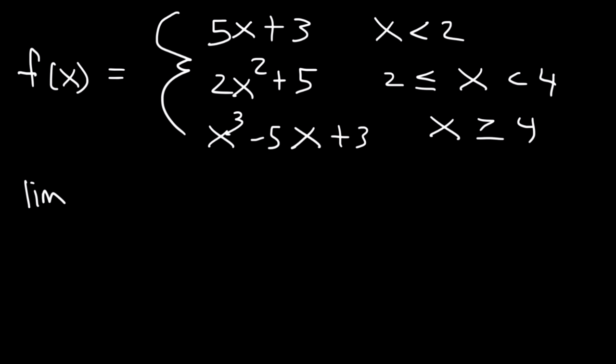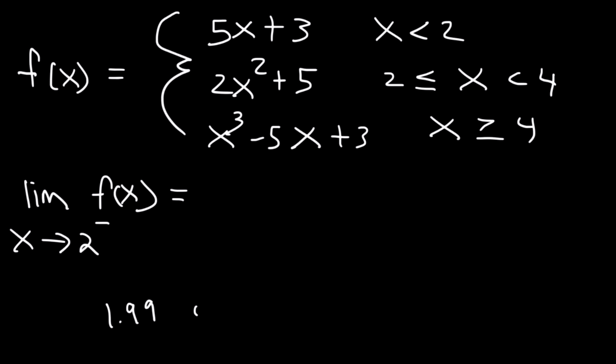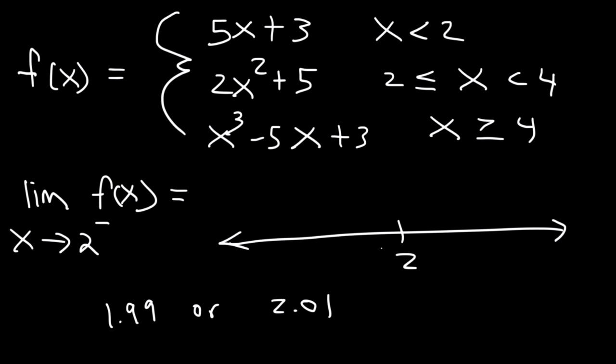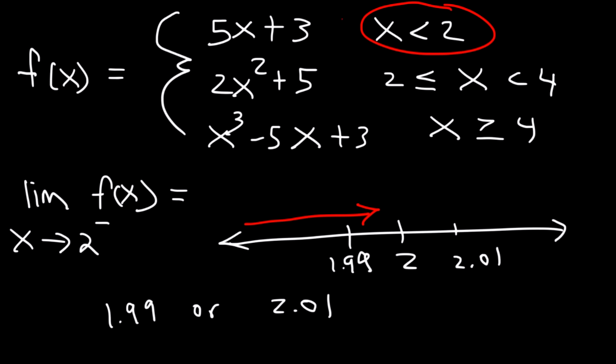What is the limit as x approaches 2 from the left side of f(x)? Which portion of the piecewise function should we use? As we approach 2 from the left, we pick a value less than 2, like 1.99. Therefore we need to use 5x plus 3, because that's when x is less than 2 — the left side of x equals 2.